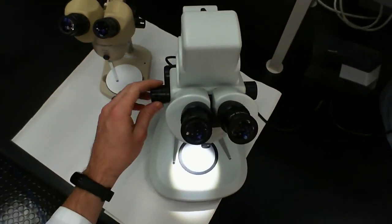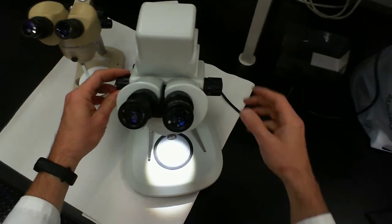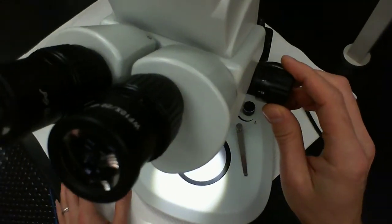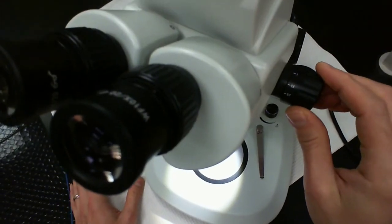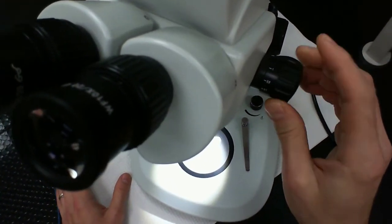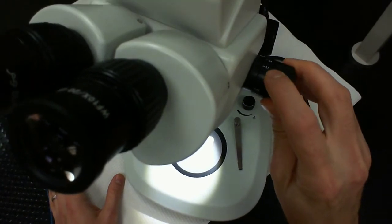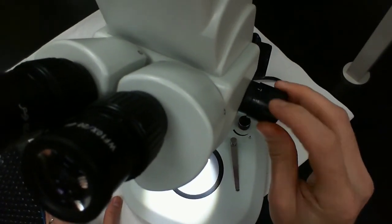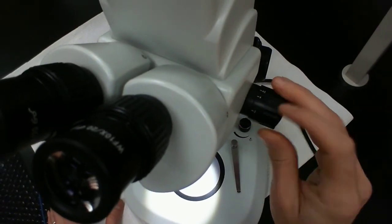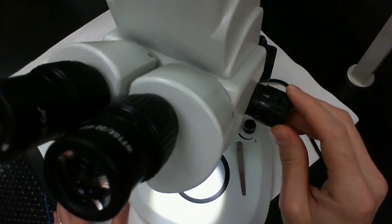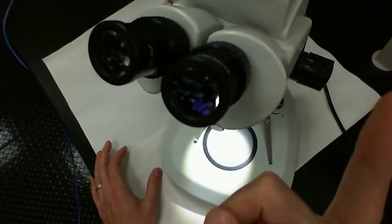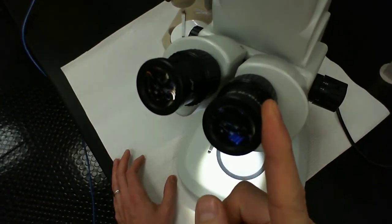This is a magnification adjustment knob over here and on this side as well. You can actually see the numbers on here. This newer microscope actually allows you to have a continuous change in magnification. The numbers start out at 0.7, 0.8, 1, 1.5, 2, 3, 4, and 4.5. The objective lens magnification is not very high and has to be multiplied by the ocular lens magnification, which is 10x.